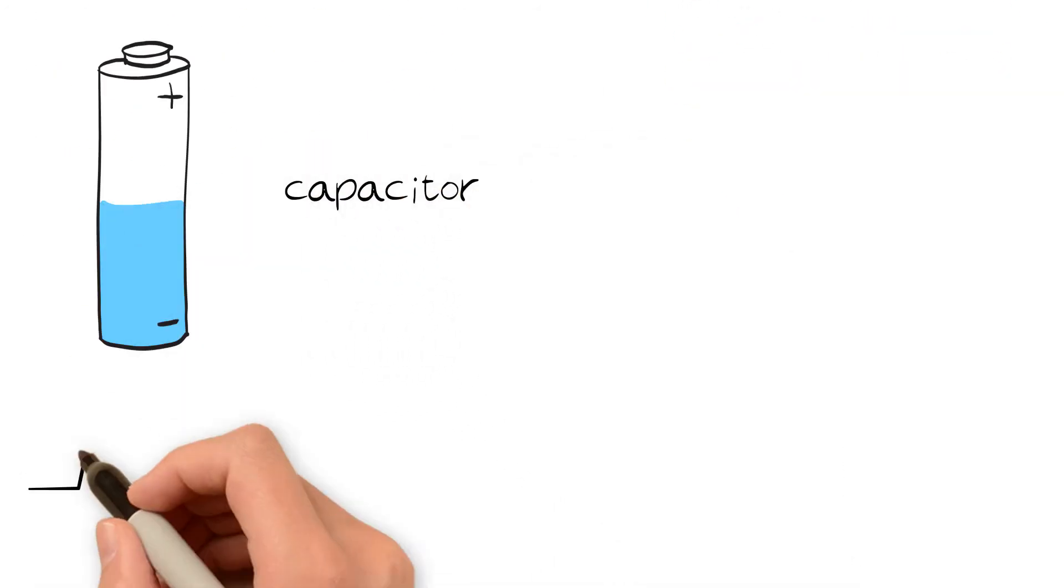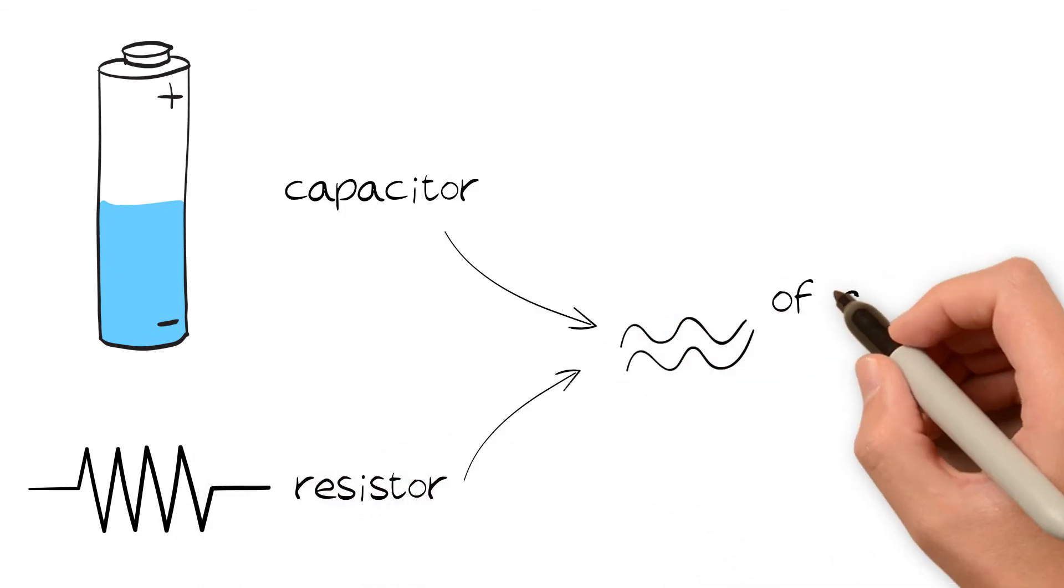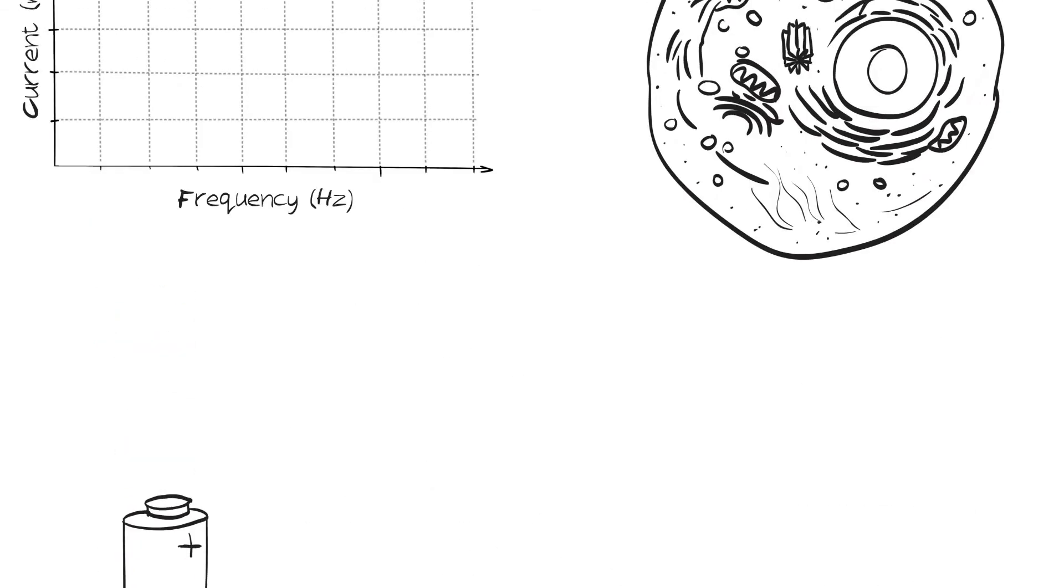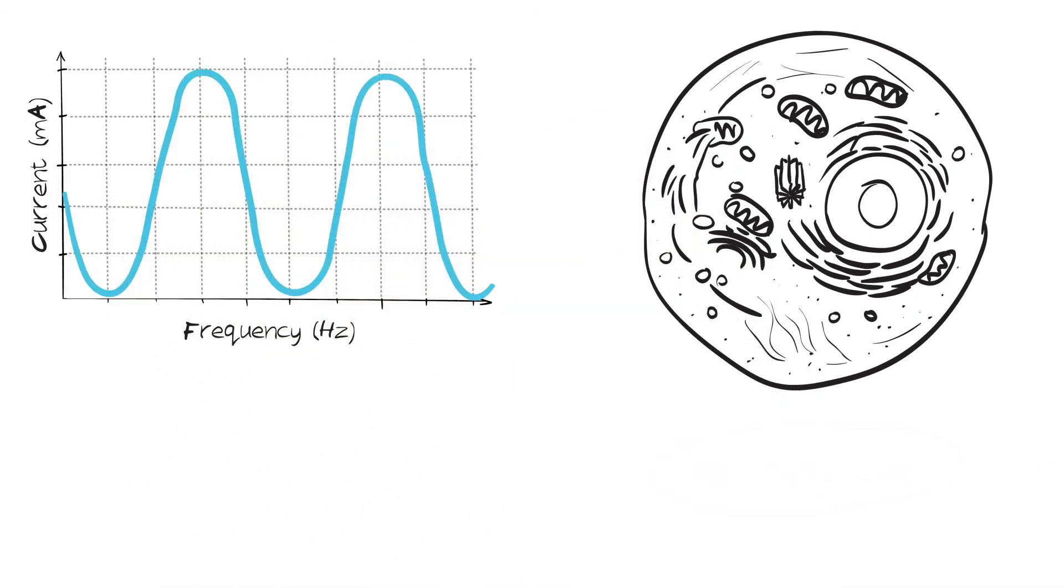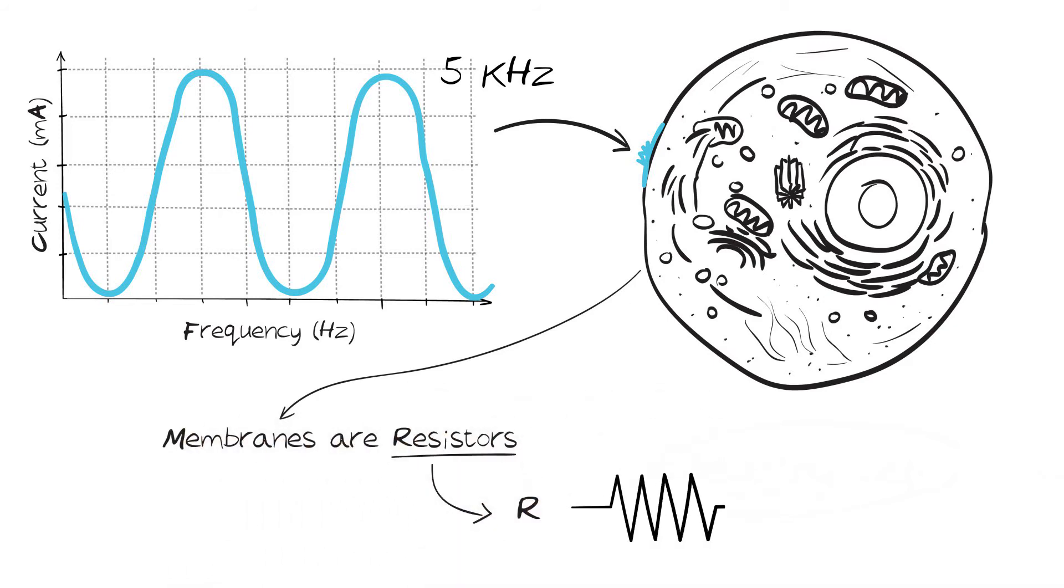Whether a cell membrane acts as a capacitor or a resistor is dependent upon the frequency of the current applied. A low frequency current of 5 kHz is stopped by cell membranes. At this point, the membranes are resistors, so no current is conducted through them.